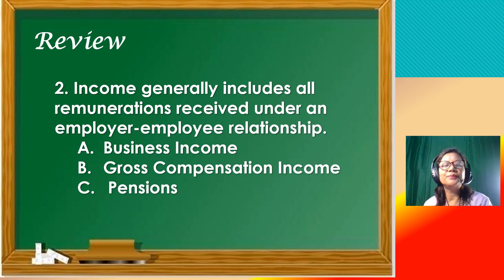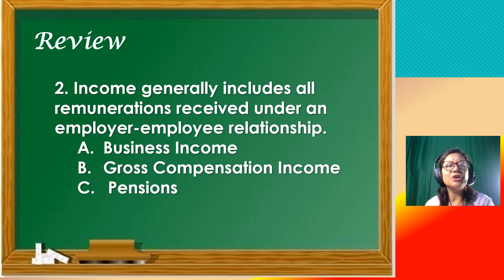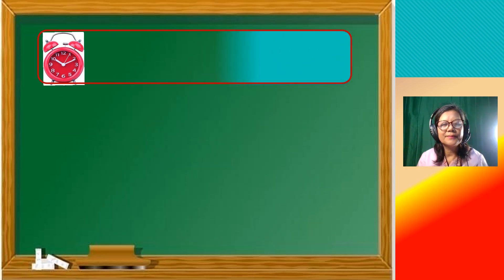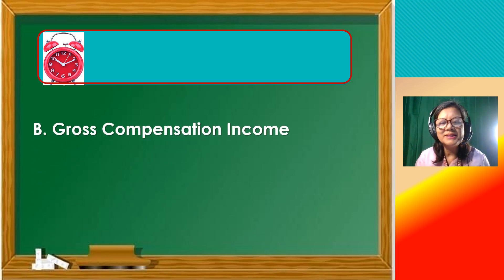Number 2: income that generally includes all remunerations received under an employer-employee relationship. Is it A, business income? B, gross compensation income? C, pensions? Time is up — what's your answer? Do you have the same answer? Gross compensation income.